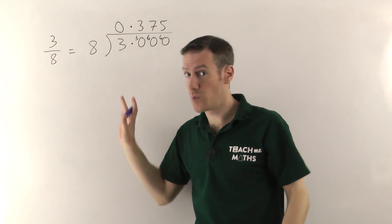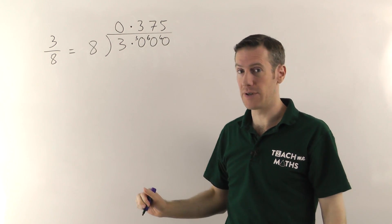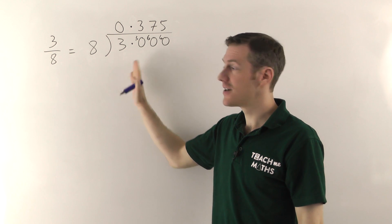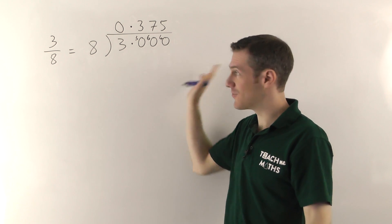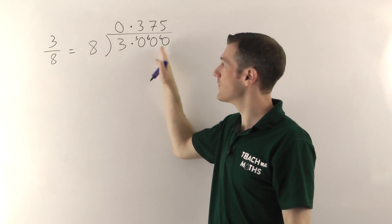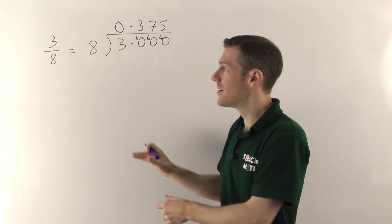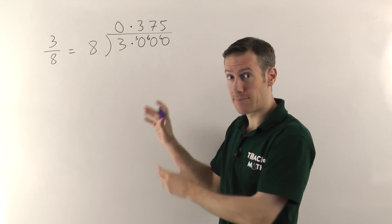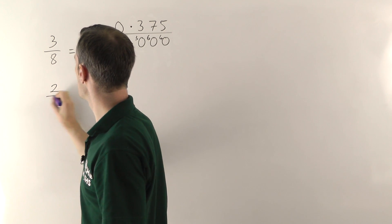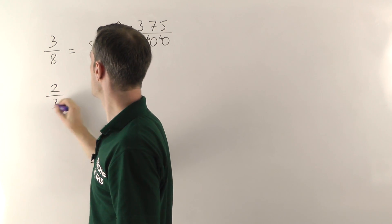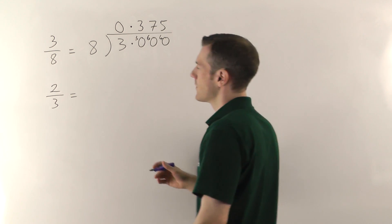That method will work for converting any fraction at all into a decimal number. You just need to know how to divide and remember to stick a point followed by however many zeros you need on the end so you've got room for all the remainders. I'll show you a couple more examples because this can get harder, but that method is always exactly the same. So we'll try 2 thirds next. Thirds are quite common, so it's one that's worth learning.